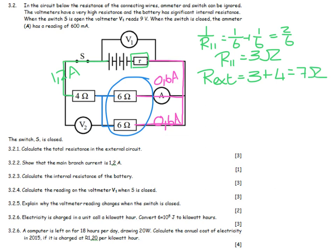Show that the main branch current is 1.2. Just saying it's 1.2 isn't particularly helpful. You need to say 0.6 plus 0.6 equals 1.2, and maybe even say something along the lines of parallel branches.